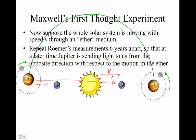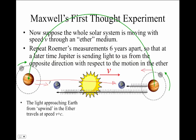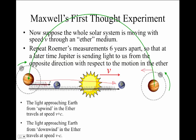Then sometimes the light is heading from upstream in the ether this way when Jupiter is on this side, and sometimes the light is coming from downstream in the ether when it's coming from the other side. Light approaching the Earth from upwind would be approaching at speed v plus c relative to Earth. Light approaching from downwind in the ether would be traveling at speed v minus c relative to Earth.